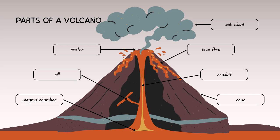A conduit, in the context of a volcano, refers to the pipe-like channel that allows magma to move from the magma chamber beneath the earth's surface to the surface during an eruption. It acts as a pathway for the molten rock, as shown in the diagram. That covers the parts of the volcano.